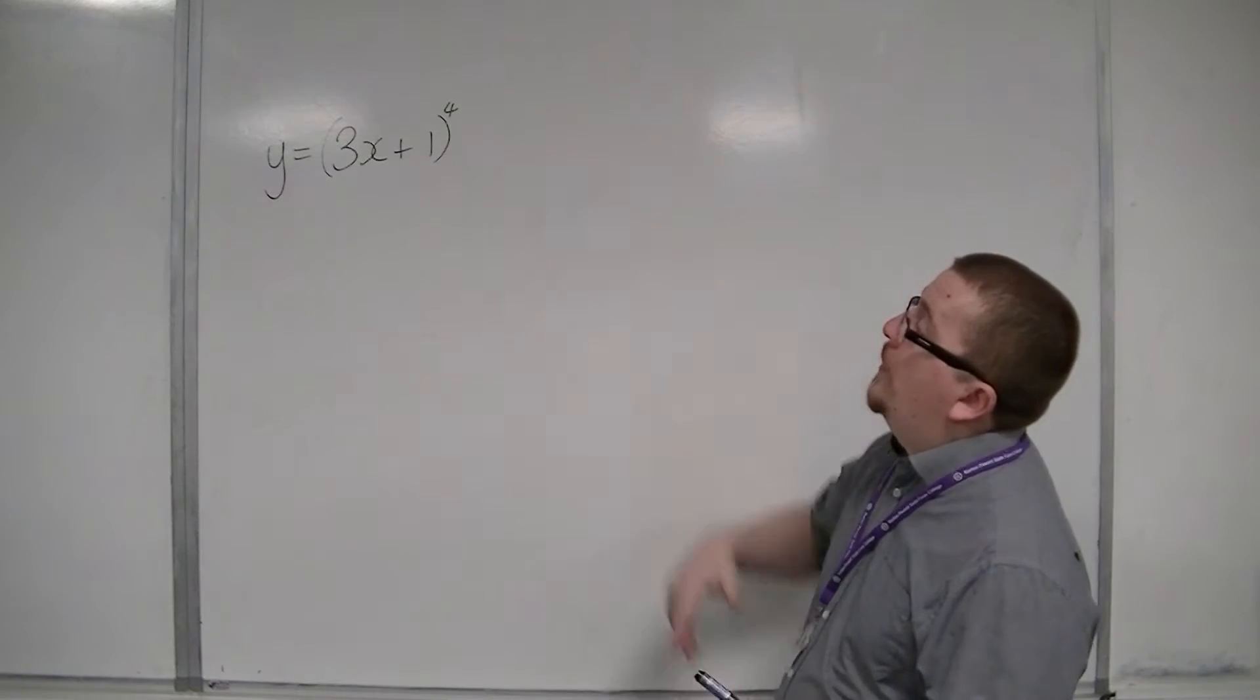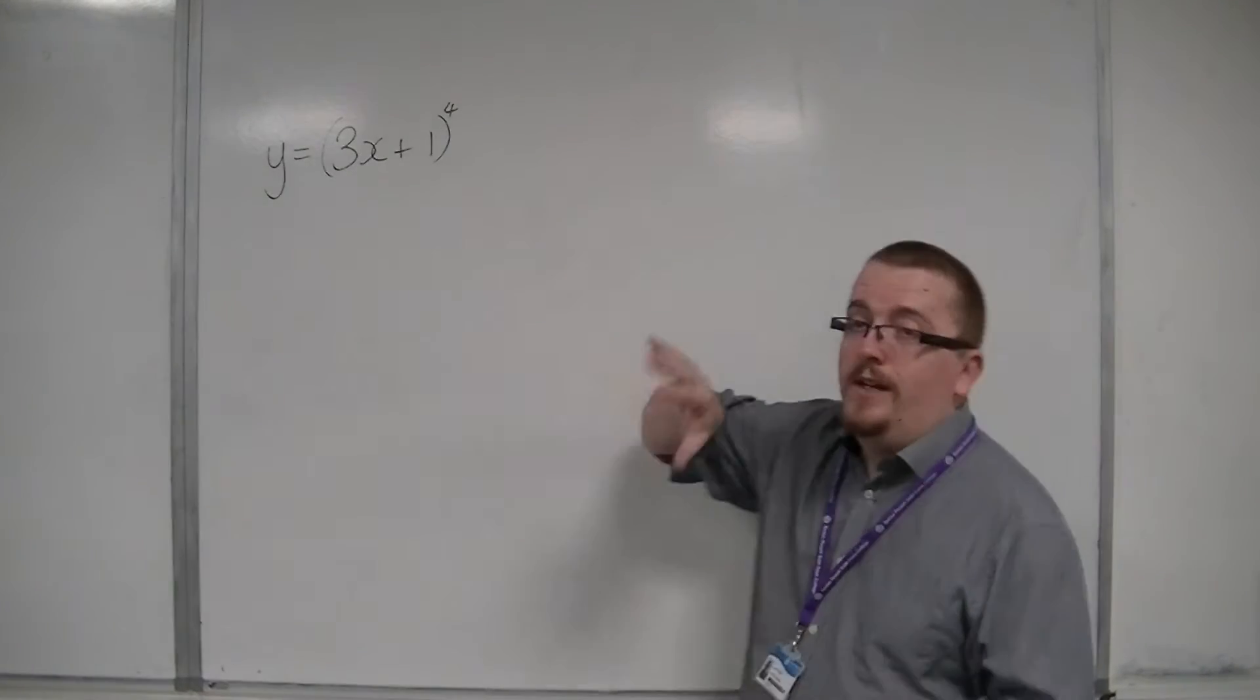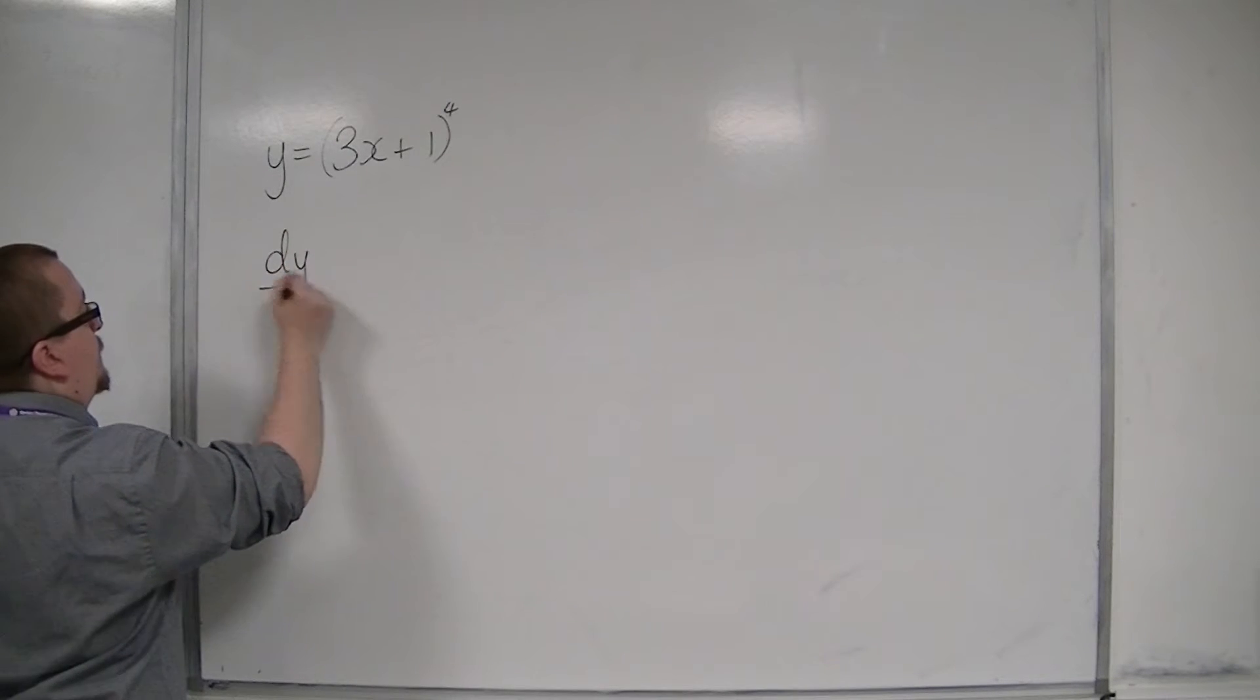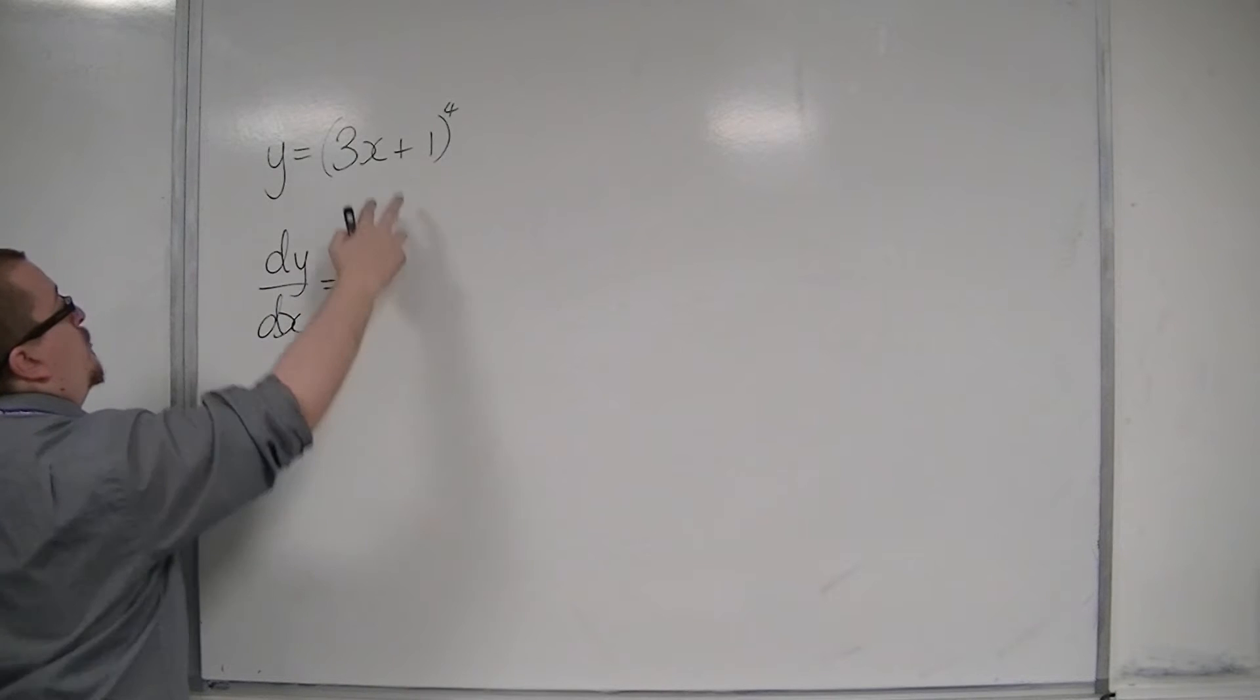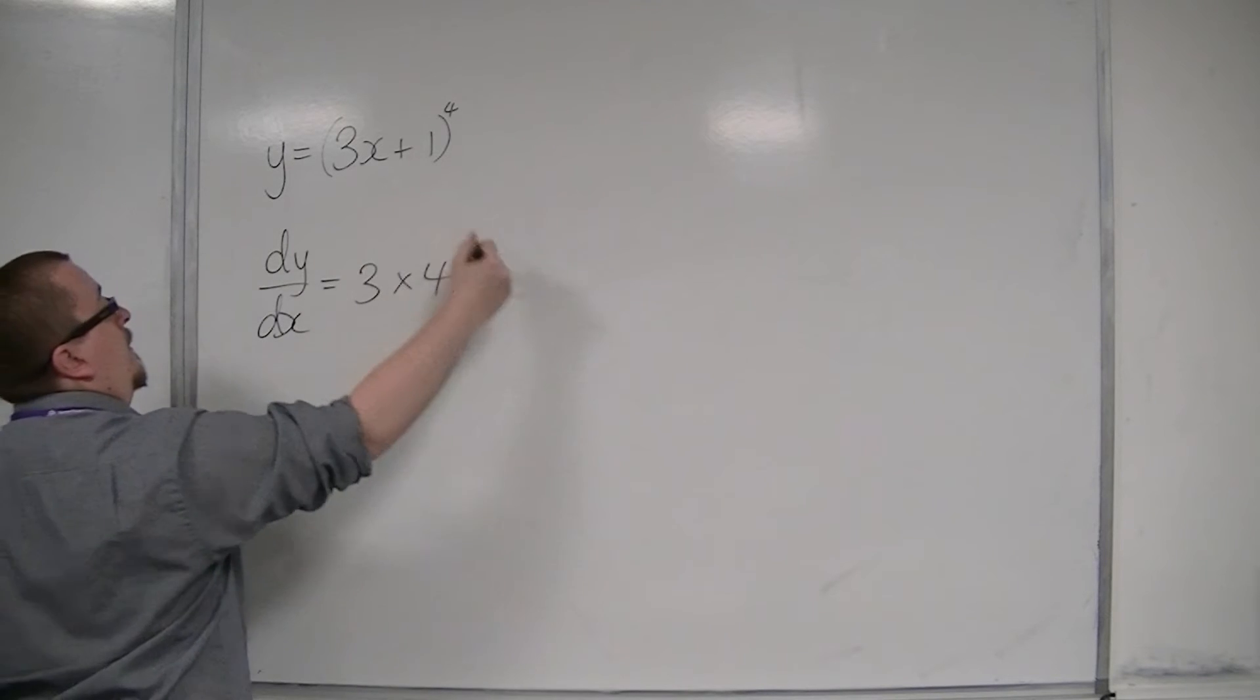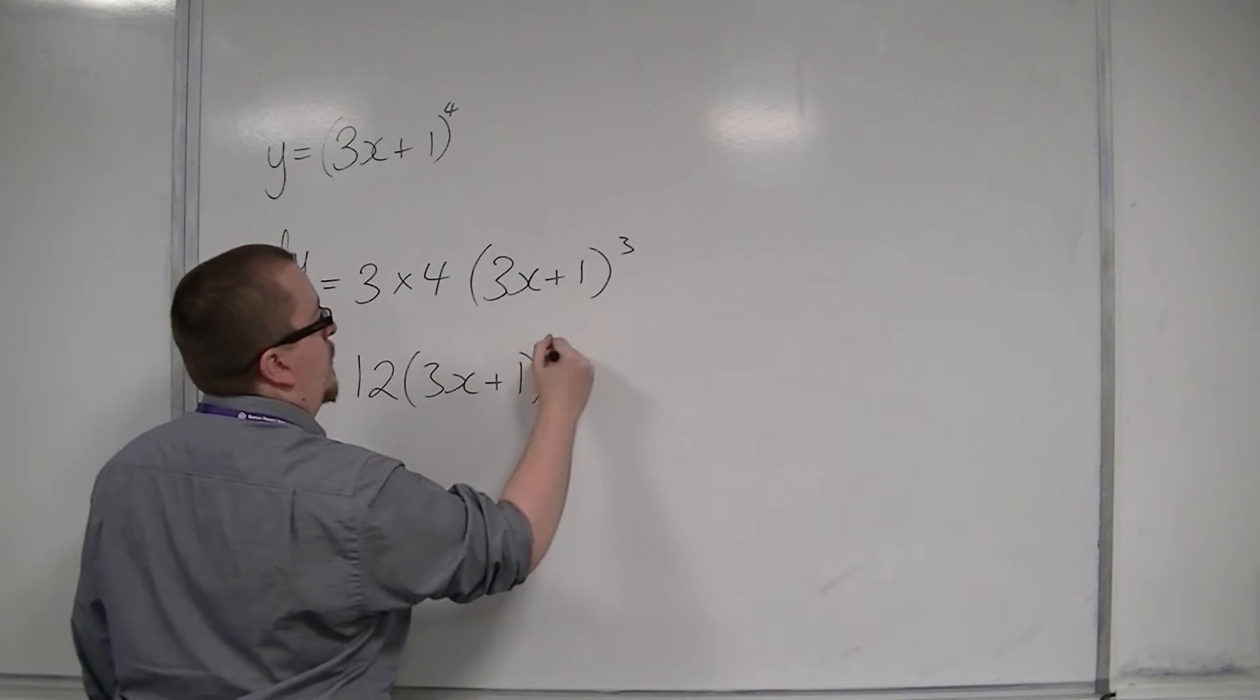For example, if I was using the chain rule to differentiate y equals 3x plus 1 to the 4, then dy by dx, the derivative of what's inside comes outside, the 4 comes down to the front, and then I still have the 3x plus 1, and I take 1 off the power. So we have 12 times 3x plus 1 cubed.